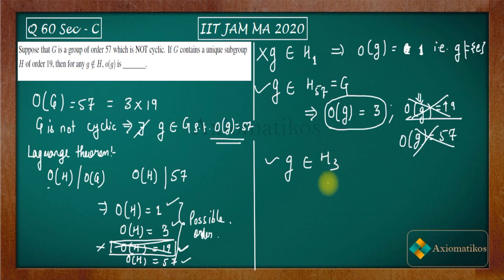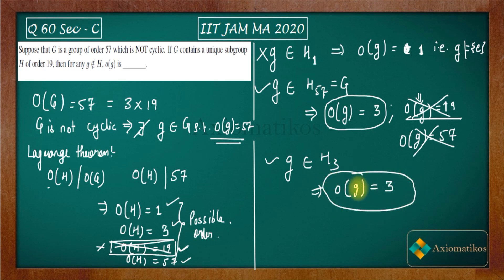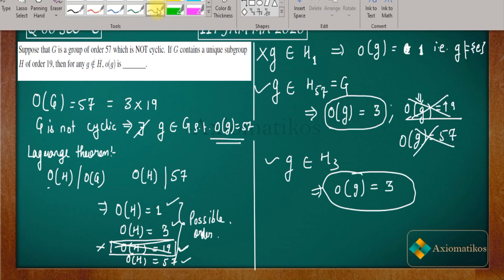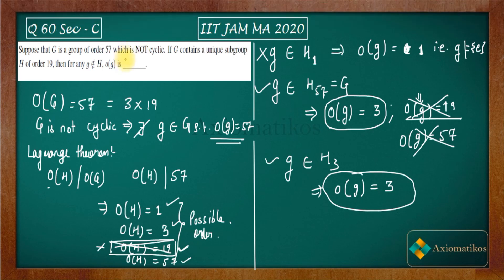Similarly, if we take the other case — g belonging to a subgroup of order 3 — the order of g is again only 3. So we can conclude that the order of the element g can only be 3. This was a question based entirely on Lagrange's theorem and the fact that the order of an element always divides the order of the group.